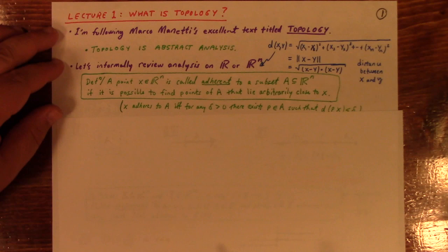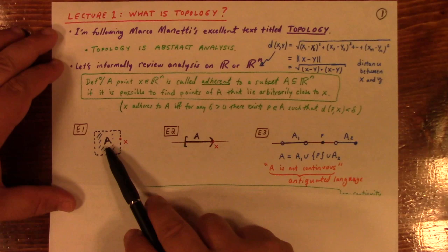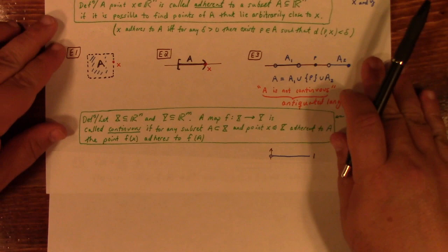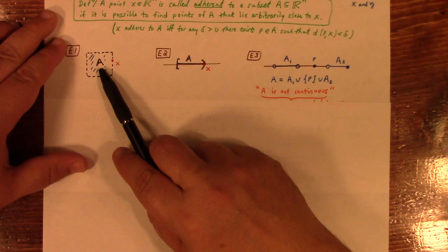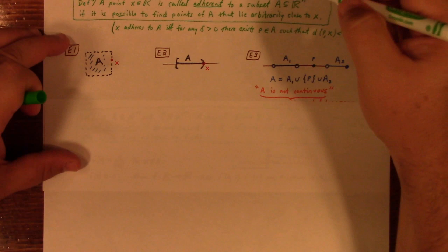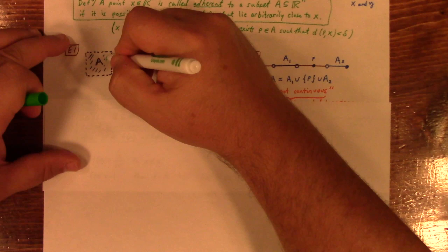Now, a couple examples here. First of all, here's just a subset of R^2. This point X here is adherent to A because you can easily see that I can draw, here I'll draw it in green. Is there any delta that exists of P in A? You can envision all the points that are within delta of X like that, and clearly there's always going to be this part that overlaps with A.